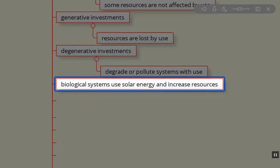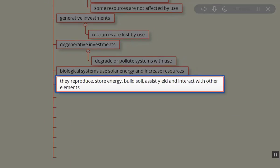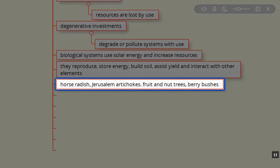So biological systems that use solar energy increase the resources on site. They produce energy, they build soil, they assist in yields, they interact with other elements on site. Here's an example. So horseradish, Jerusalem artichokes, fruits and nut trees and berry bushes. These are all perennials, and so we can go out and harvest the horseradish, we can harvest the Jerusalem artichokes, and as long as we don't take too much, they're going to come back year after year after year. We can use them and plant other places, barter with them, and use them over and over again. A really good example of a regenerative system.